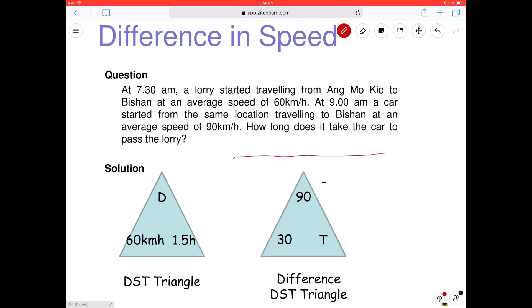Okay. So we have Ang Mo Kio. And then they are travelling to Bishan at an average speed of 60. So the lorry started earlier, right? At one time. Oh, I know how to do this. Yeah. So 7:30. 7:30am. Okay, let's take a look first, right? See how it works. Okay. Then later we've got a lot of questions you can try. Okay. So from A to B, lorry at 7:30am.